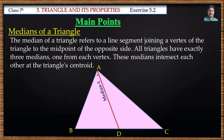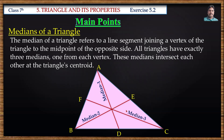In the same way, we can draw a median from vertex B to side AC. Suppose the midpoint of side AC is E; if we join vertex B to E, this becomes a median. If F is the midpoint of side AB and we join vertex C to F, then this is also a median. For each triangle there are three medians, and all the medians meet at a point.